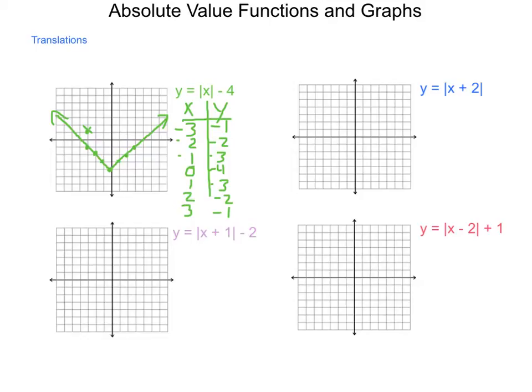If we think about it, this value of negative 4 is placed outside of our grouping symbol — and as we learned in our last lesson on families of functions, anything outside is a vertical translation.